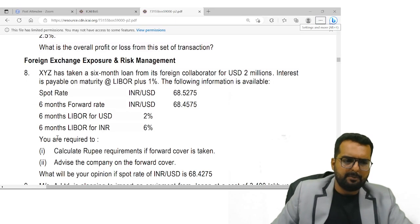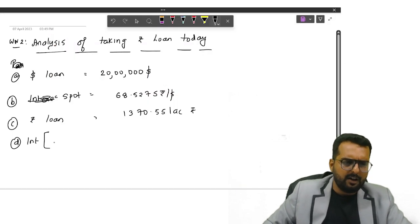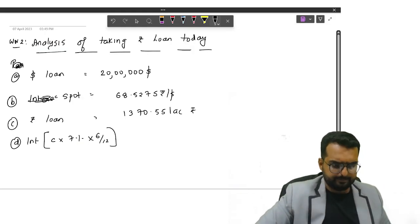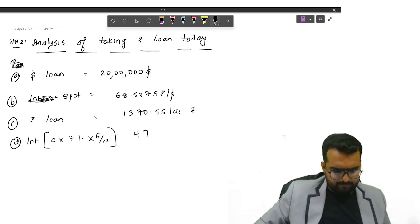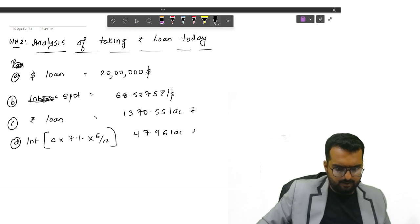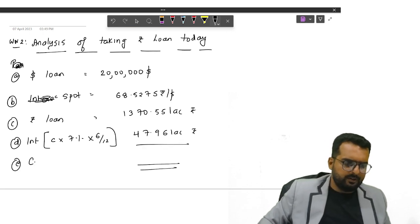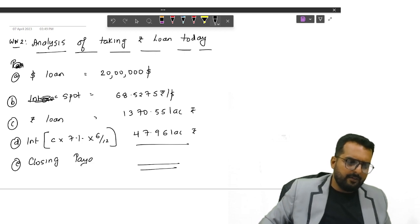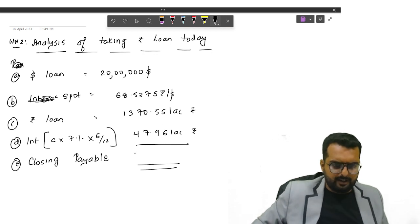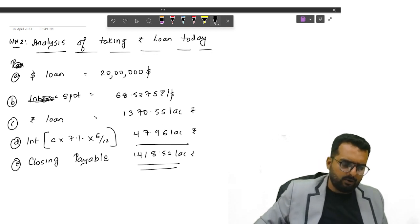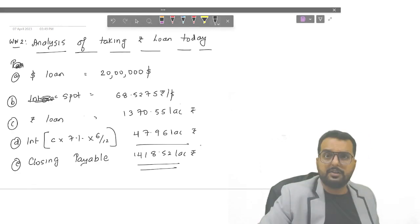1,370.55 lakh rupees. On this how much will be the interest that will come? It is 6% plus 1. LIBOR plus 1. Right? Interest payable on maturity is going to be LIBOR plus 1%. So that will be 7. So C into 7% into 6 by 12, because the duration is only 6 months. Now, once I do this, what is the closing amount that is payable by me?